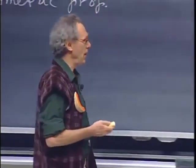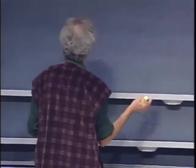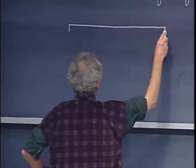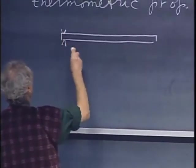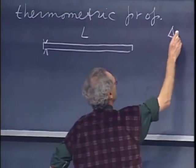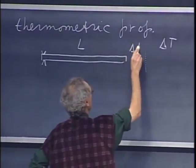And so you can define a temperature scale by looking at the length of an object. For instance, here is a bar of some material. I clamp it in here. It has length L. And I increase the temperature by an amount delta T, and it gets longer by a certain amount delta L.